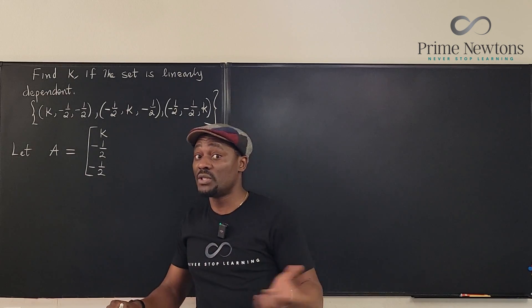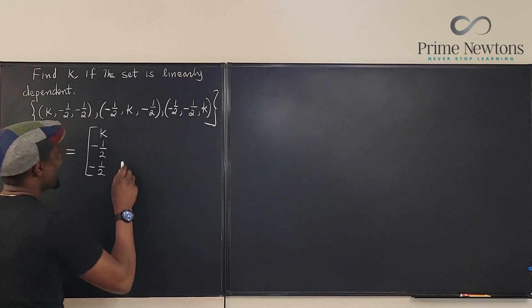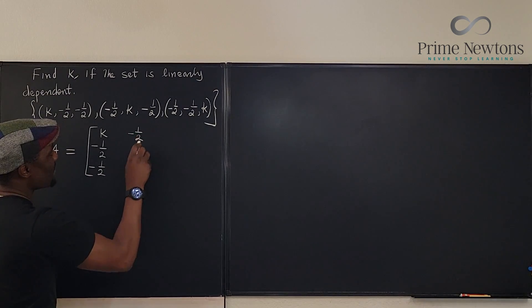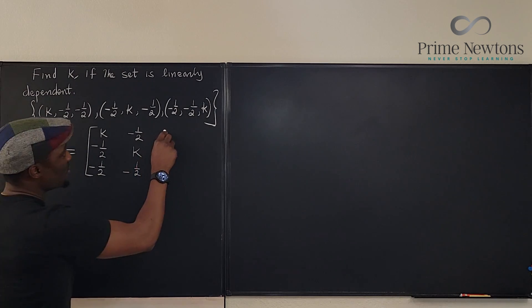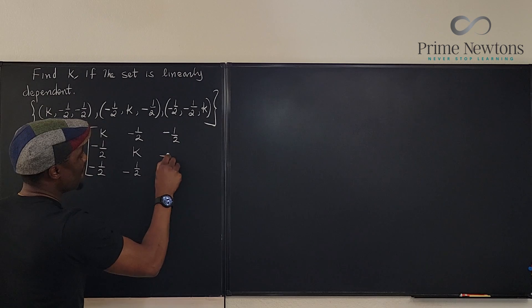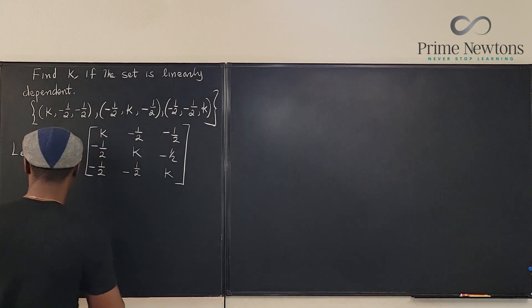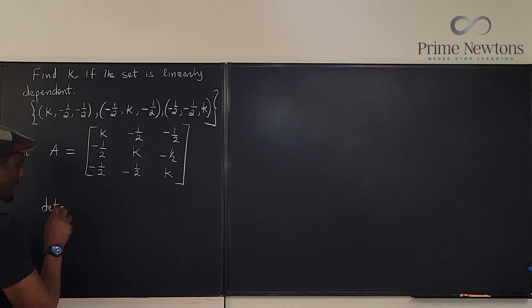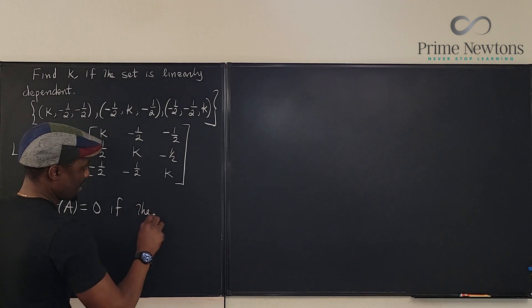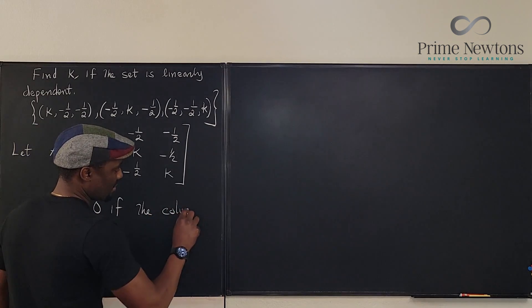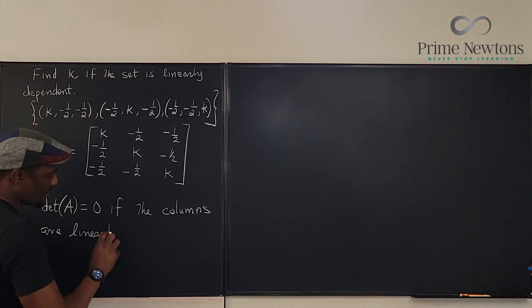If they're supposed to be horizontal, you would be told. Now the second column will be negative one half, k, and negative one half. And the third column will be negative one half, negative one half, and k. So this is our matrix, and we know that the determinant of A is equal to zero if the columns are linearly dependent.